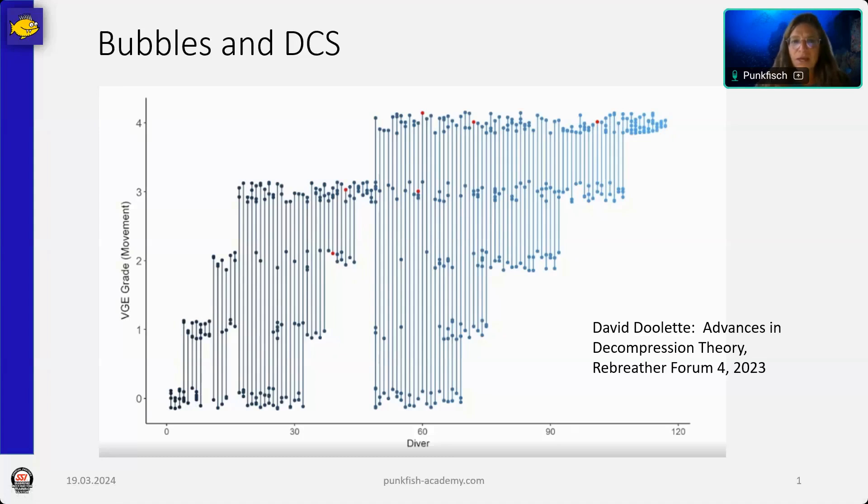So it is not clear that certain dive profiles will make you have a lot of bubbles. And then the next thing is it is not even clear that lots of bubbles mean DCS. It's not that straightforward. If you look here, there are these tiny red dots, just six of them in between these lots of bubbles that have been measured. And just these six tiny little dots are actual DCS.